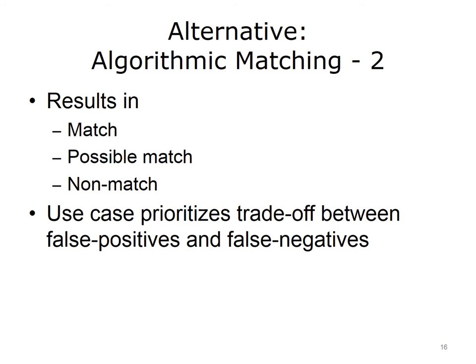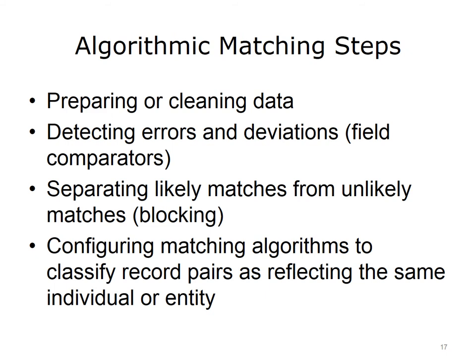There is a trade-off between false positives and false negatives, and usually the use case prioritizes the trade-off. In the algorithmic matching process, there are a series of steps: first, the data undergoes a preparation or cleaning process; next is the detection of errors and deviations, looking at field comparators; this is followed by the separation of likely from unlikely matches, sometimes called blocking; and finally, the configuring of matching algorithms to classify record pairs as reflecting the same individual or entity.